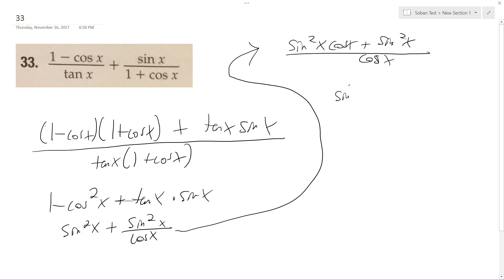So I can factor out sine squared x, and I get cosine x. I don't even know if I should have done that. I'll just leave it as it is.